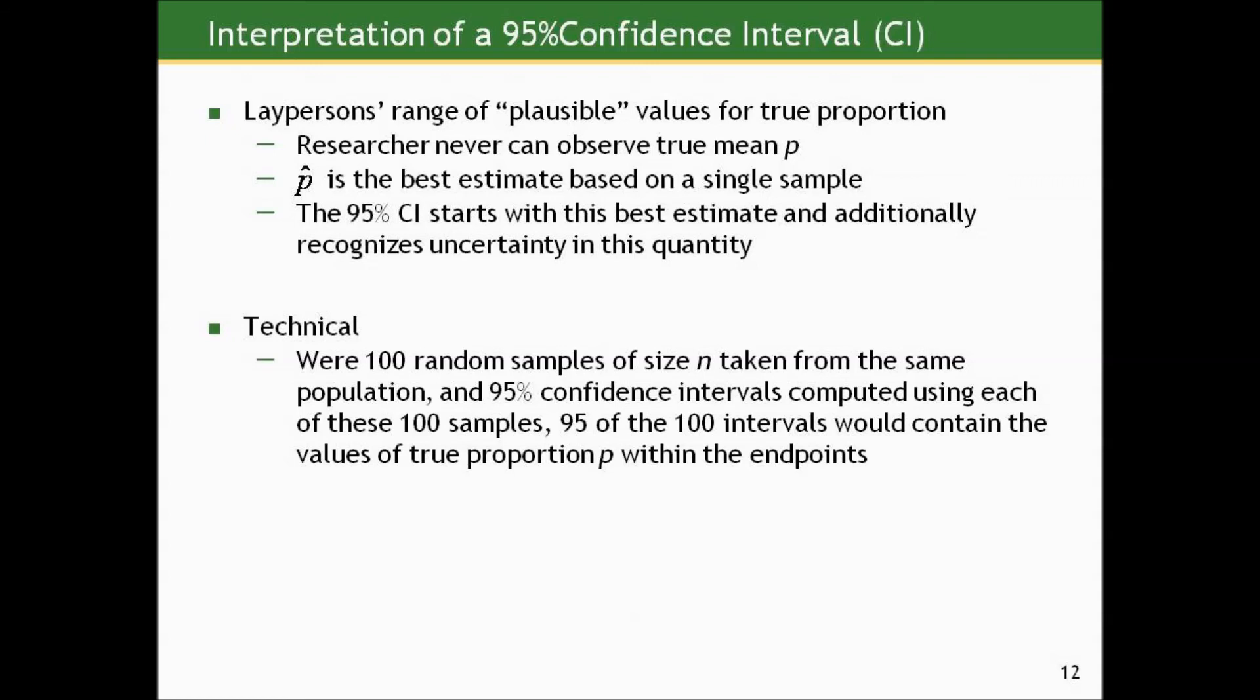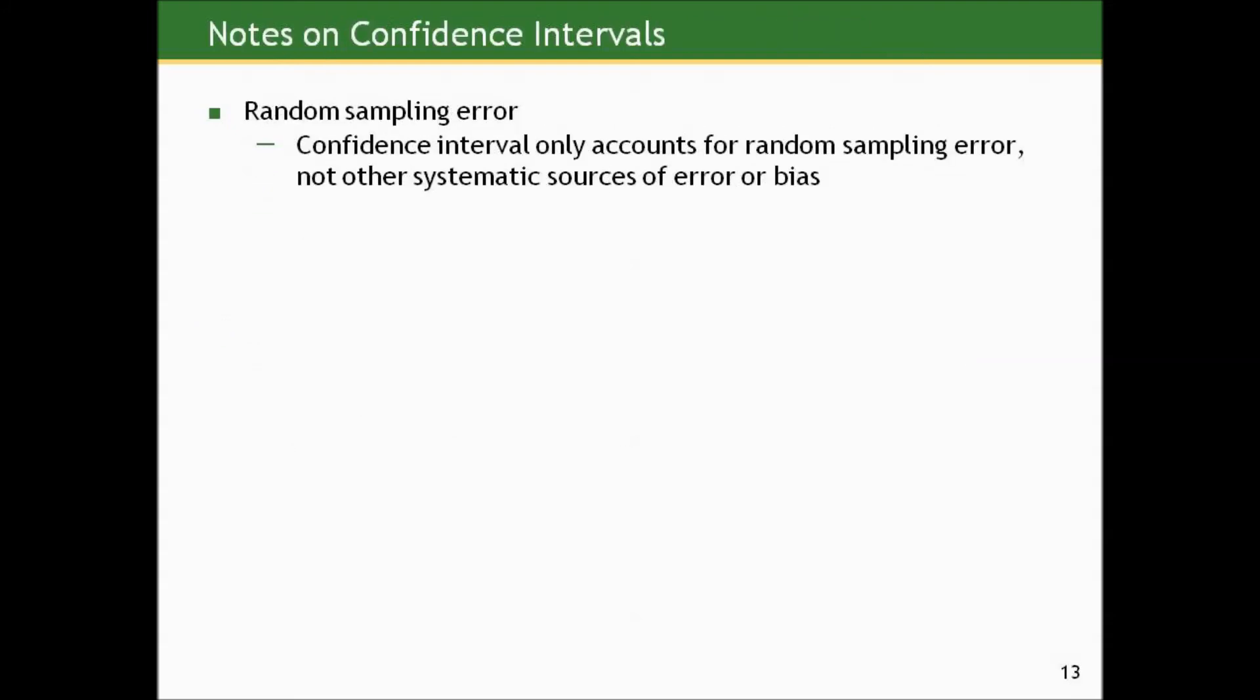Technically speaking, if we had done 100 random samples of size n taken from the same population, and 95% confidence intervals were computed using each of these 100 samples, 95% of the 100 intervals would contain the value of the true proportion p within their endpoints. And again, these are only accounting for random sampling error. Confidence intervals only account for random sampling error, not other systematic sources of error or bias.